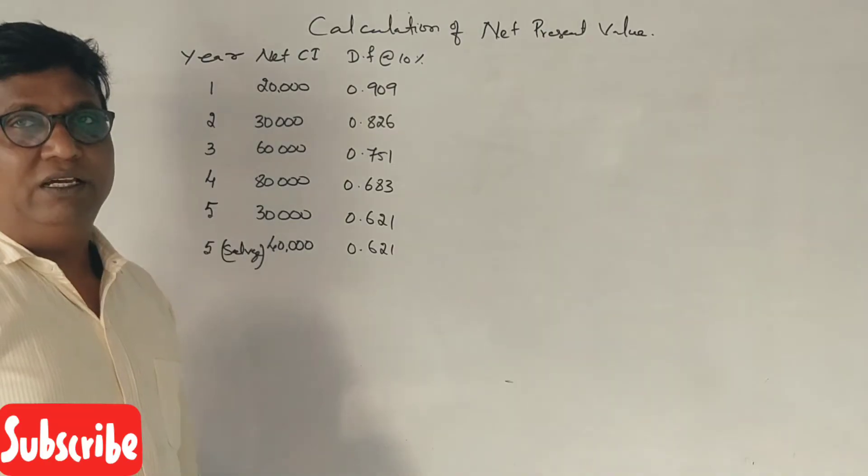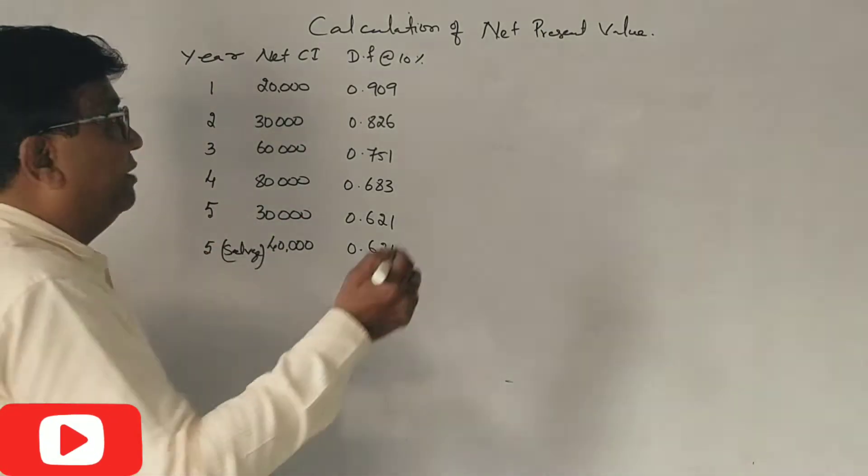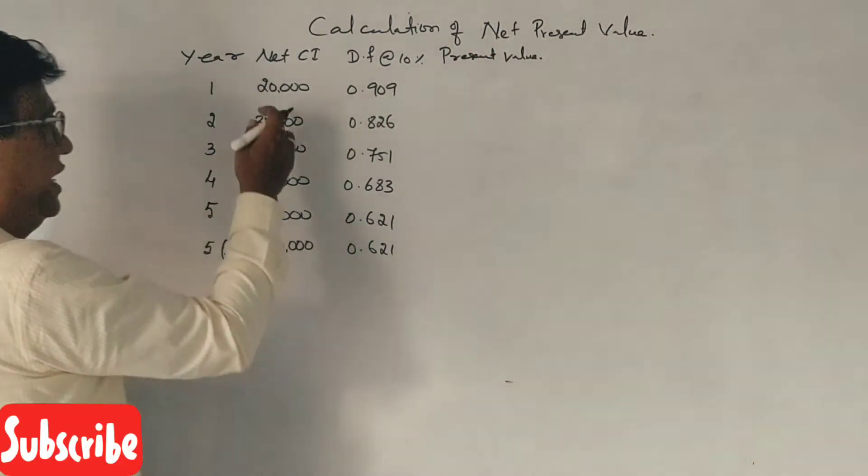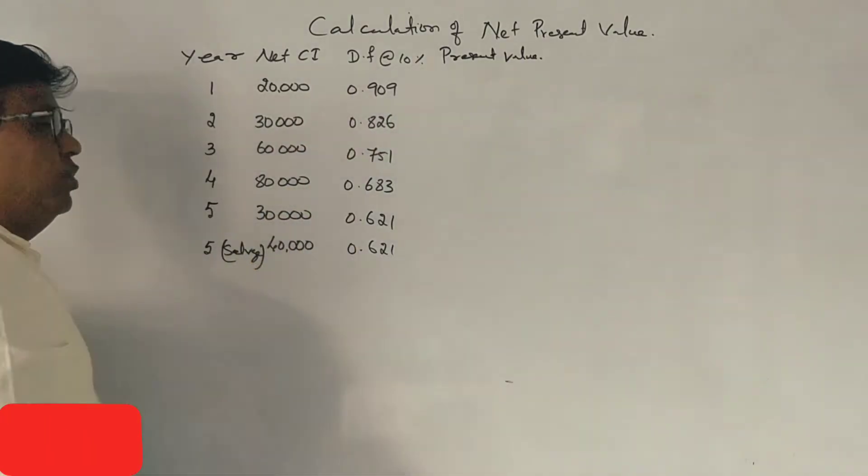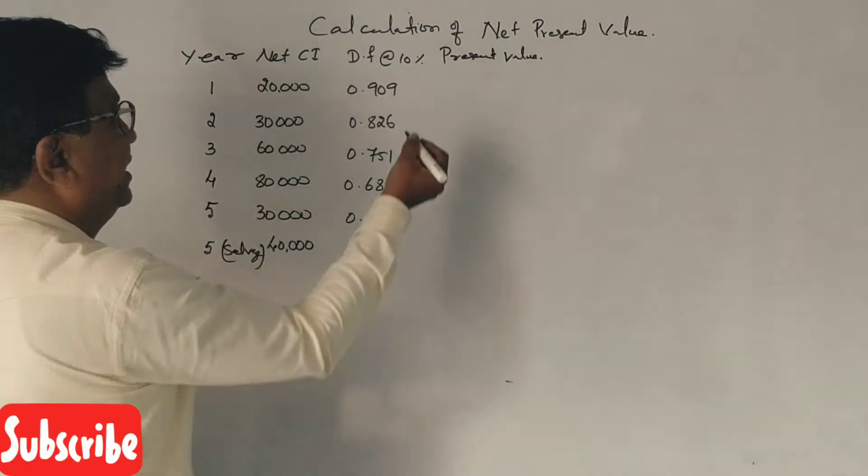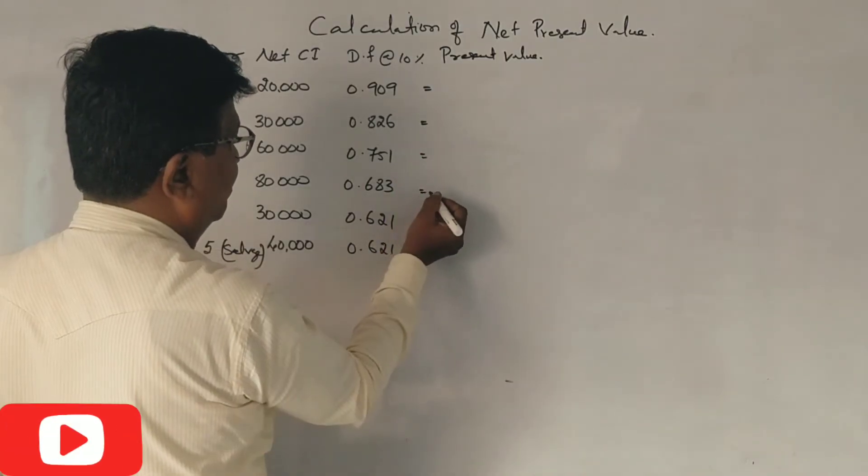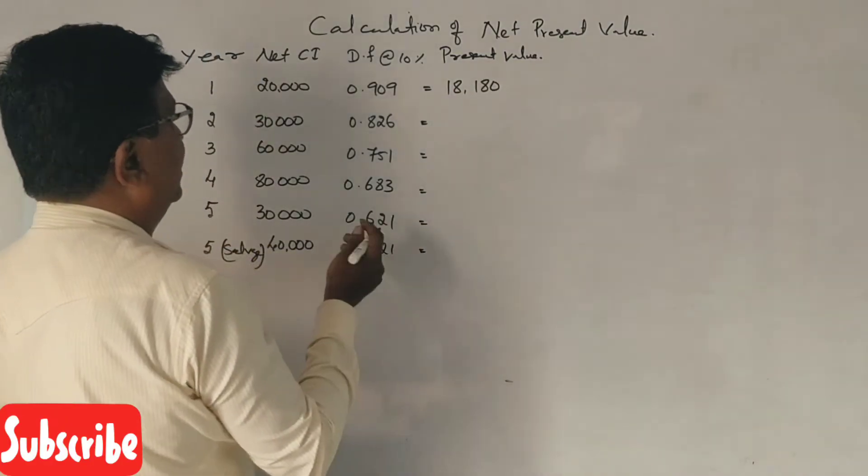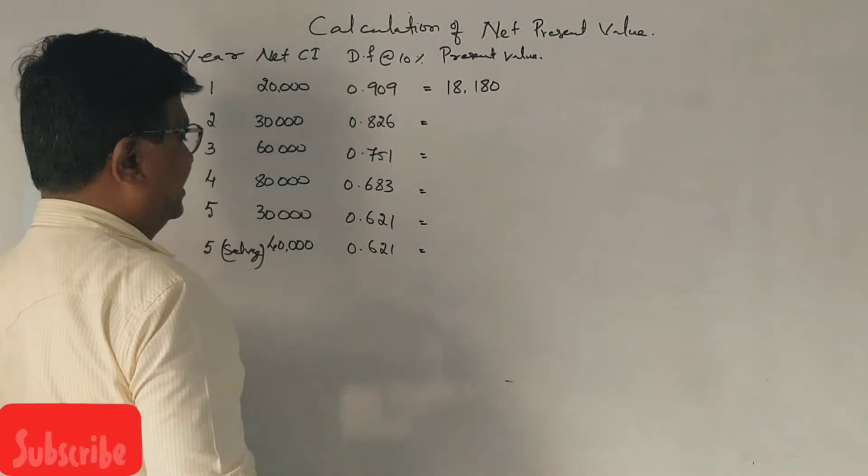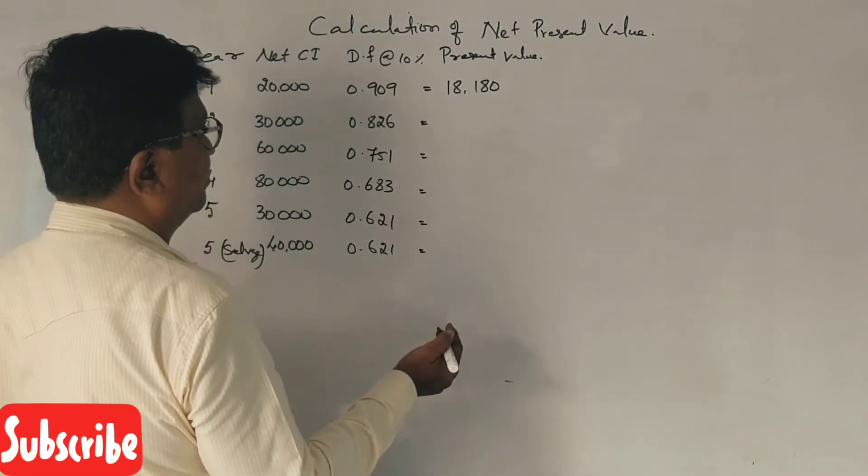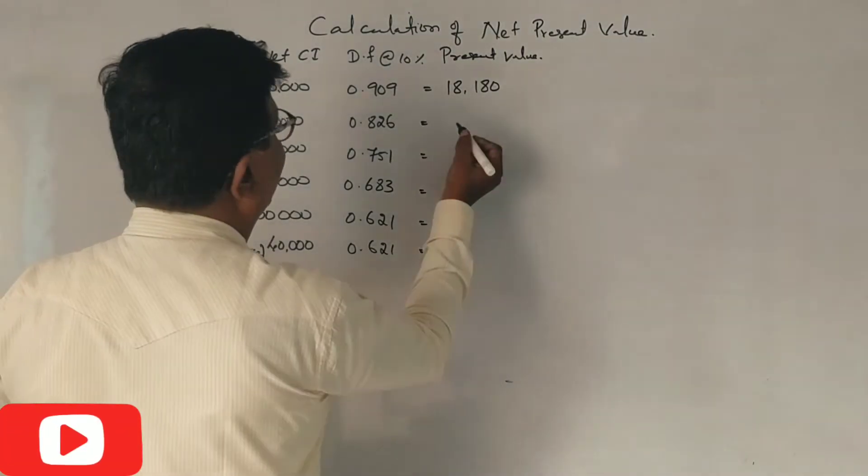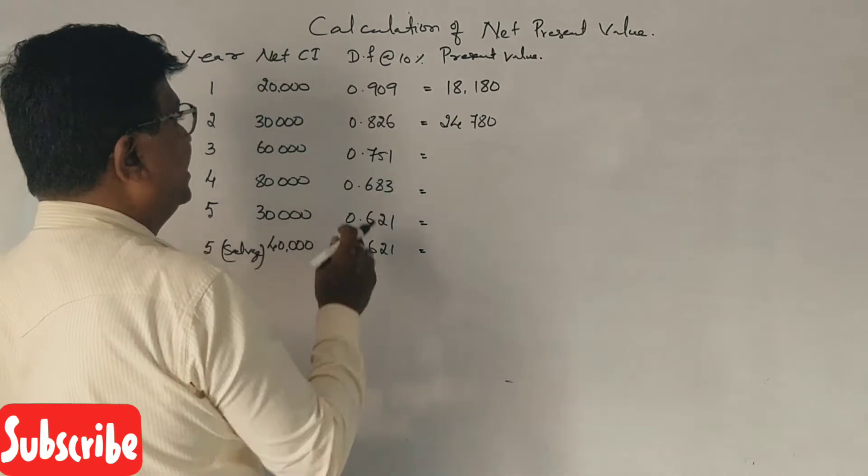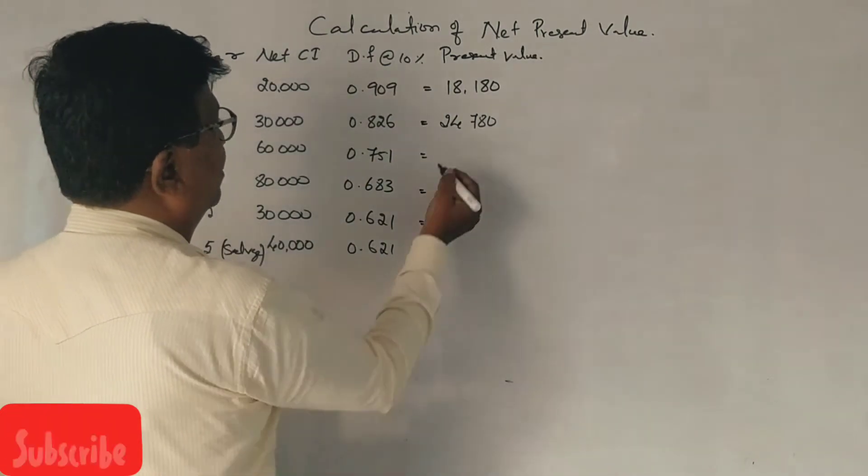Now, present values are total to calculate. Present values are 20,000 into 0.909, 18,180. 30,000 into 0.826, 24,780.